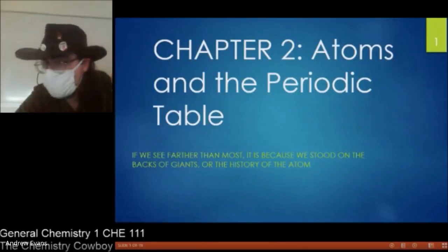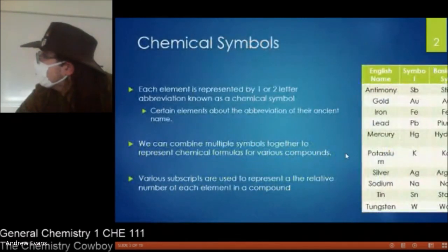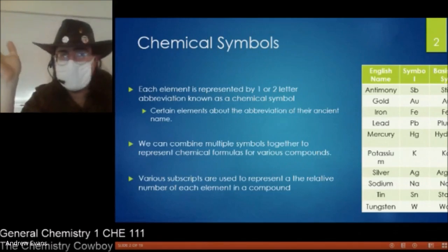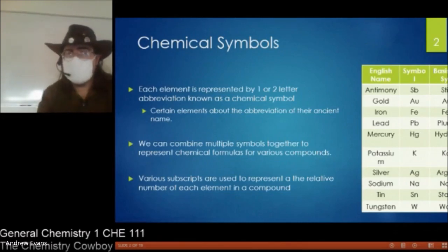Chapter two. We're looking at atoms and how we know what we know. So the first thing we need to get up is the basics of chemical symbols. That each element is going to be represented by either one to two letters of the alphabet known as our chemical symbol.